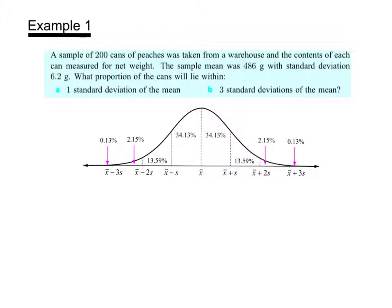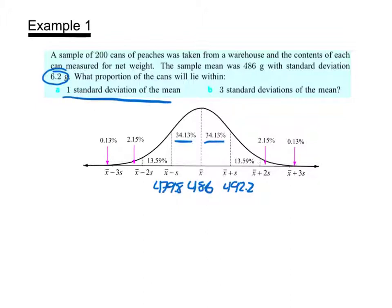Using the general normal distribution curve from the previous slide, we can fill in the numbers. The sample mean is 486 and the standard deviation is 6.2, so one standard deviation to the right gives 492.2 grams and one standard deviation to the left gives 479.8 grams. This helps us answer the first question: approximately 68 percent of the cans should lie within one standard deviation of the mean, which is 486 plus or minus 6.2 grams.